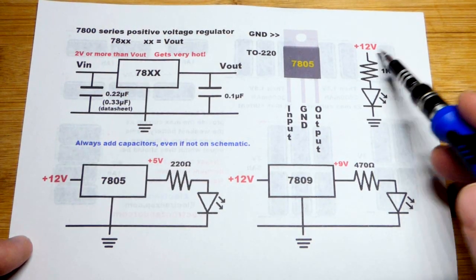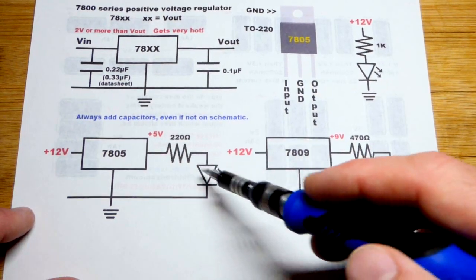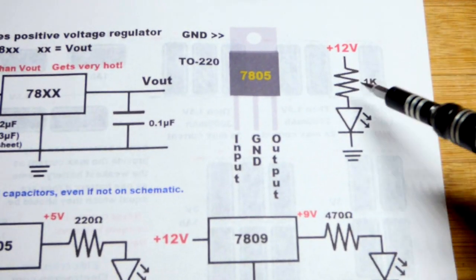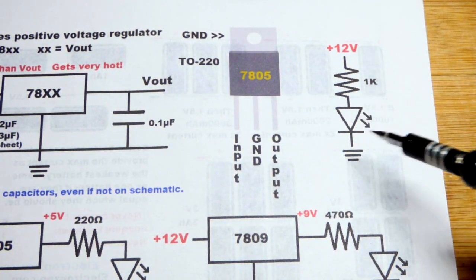So now in this video we're going to use 12 volts to light a few LEDs. This LED here will have a 1 kiloohm resistor. We can use 12 volts just fine.